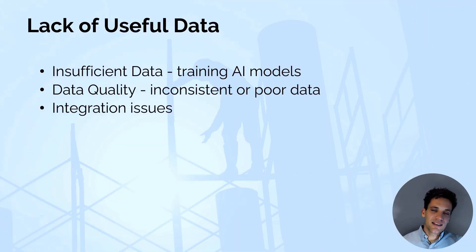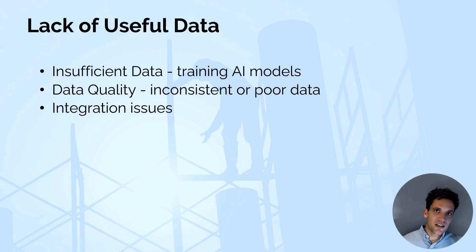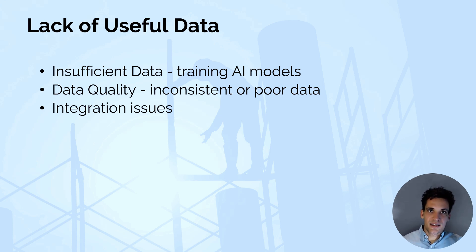The first challenge is a lack of useful data. Projects generate a lot of information — for example, an earthworks project will have survey data, historic rainfall data, data like the number of people on site — but ultimately if we're going to use AI to improve decision making and project outcomes, we need useful data that reflects current project progress, future project risks, and current project expenditure. We need to collect data that matters.